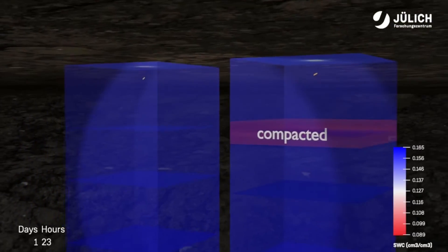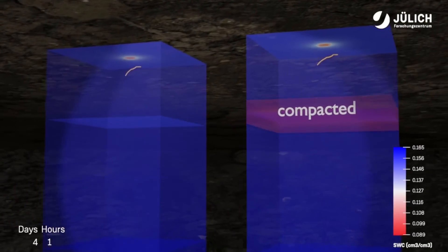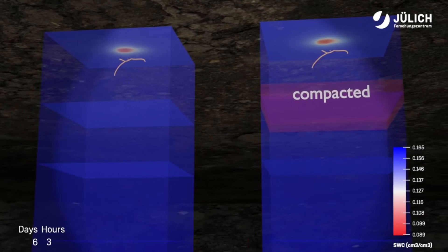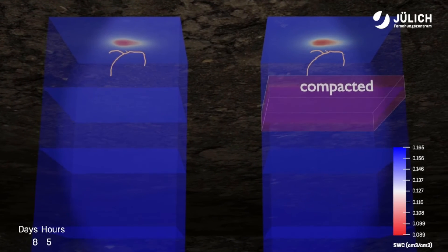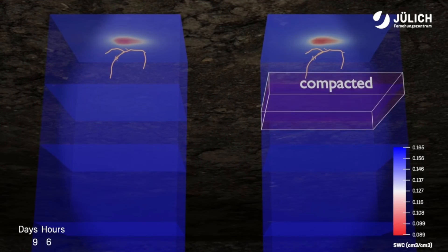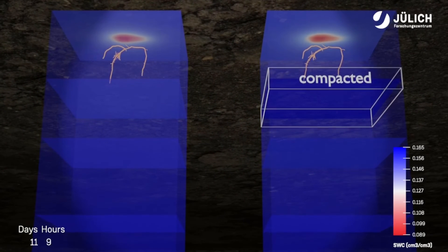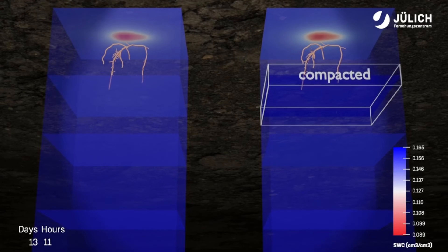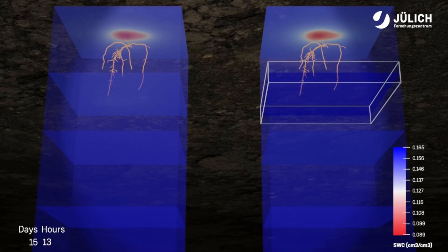Soil compaction constrains crop growth by limiting access to stored soil water and nutrients. In compacted soil, roots have to apply more force to displace soil particles when they are growing.